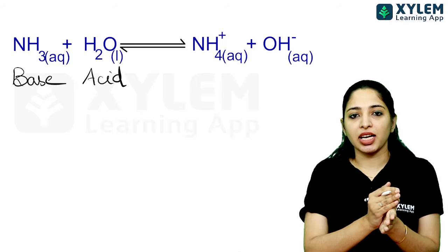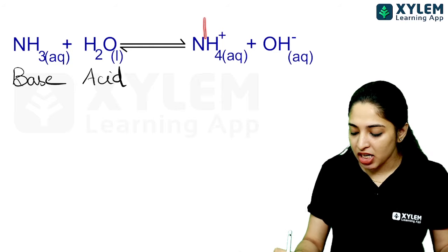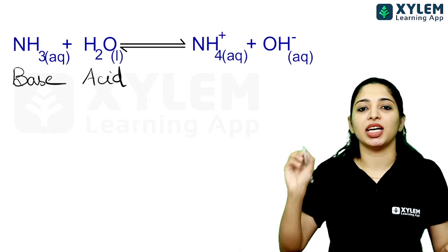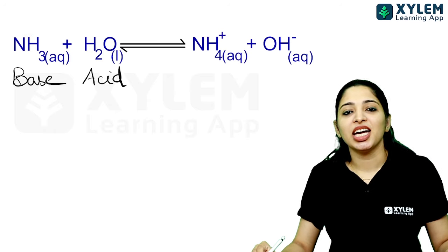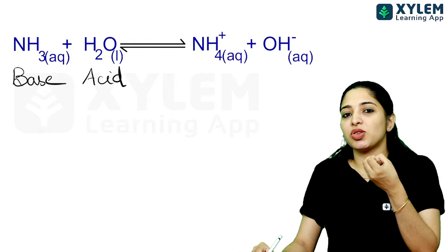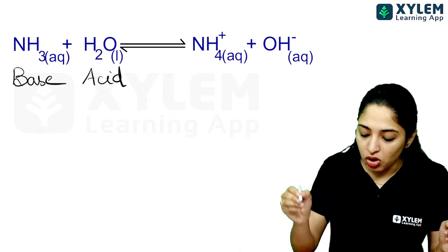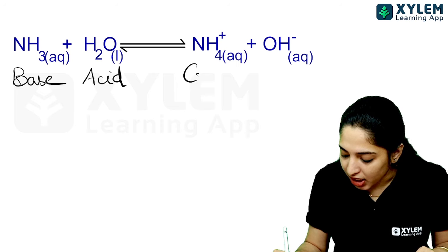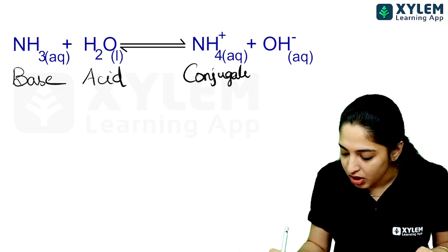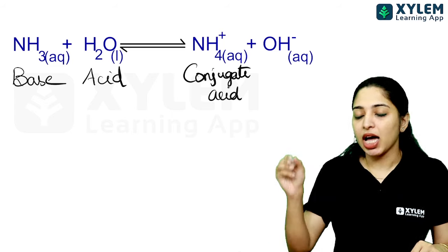Let's take the reverse reaction. In the reverse reaction, NH4+ donates H+, giving back NH3. So NH4+ is an H+ donor, meaning it is an acid. This acid is called the conjugate acid.